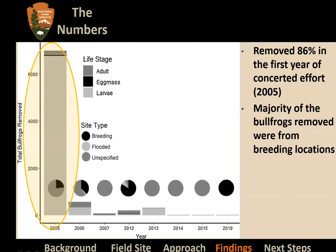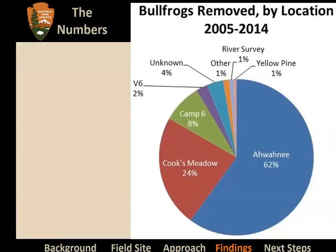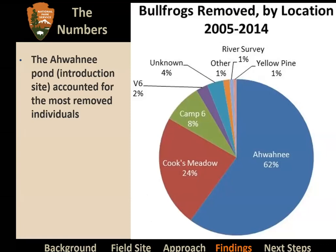The majority of bullfrogs removed were from breeding locations. The Ahwahnee Pond — the introduction site — accounted for most individuals removed, followed closely by Camp 6 and Cook's Meadow, the two sites closest to Ahwahnee Pond. Even after decades of presence since the 1950s, we still removed the most individuals from sites closest to the introduction site.